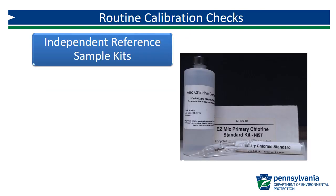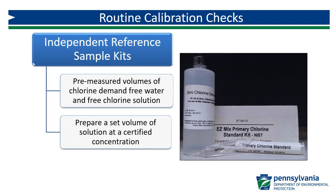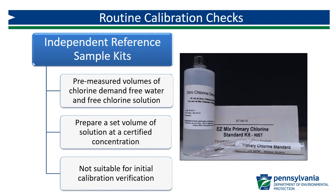Independent reference sample kits are an option available for routine calibration checks. These kits contain a bottle of pre-measured chlorine-demand-free water and an ampoule of NIST-traceable free chlorine solution. When mixed according to manufacturer's instructions, each kit produces a set volume of free chlorine solution at a concentration certified by the manufacturer. While they can be used for routine quarterly checks, they are not suitable for initial calibration verifications, as each kit only produces one concentration — and the initial calibration verification requires standards diluted to three different concentrations.